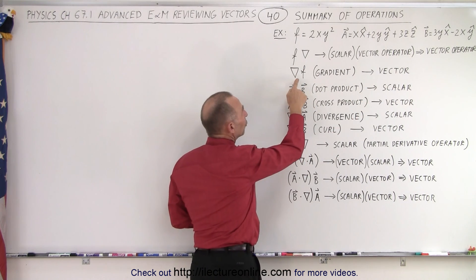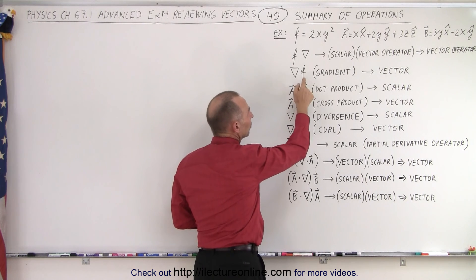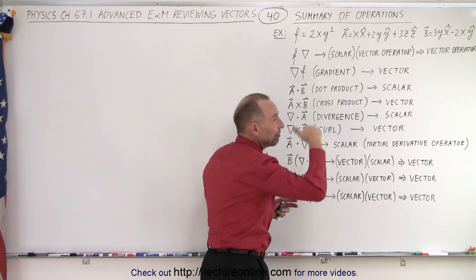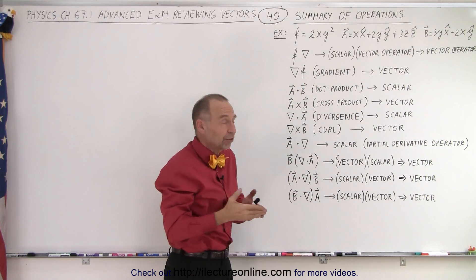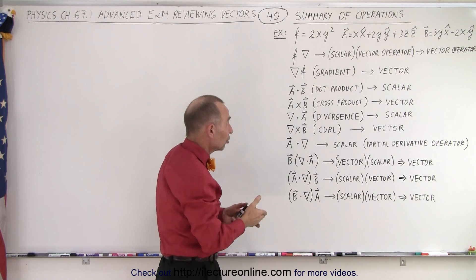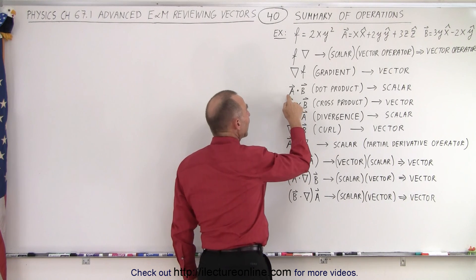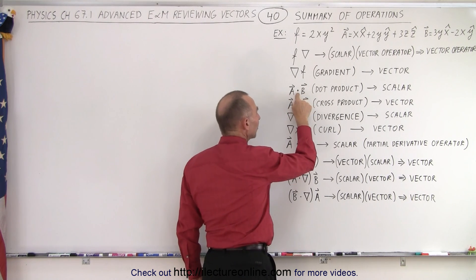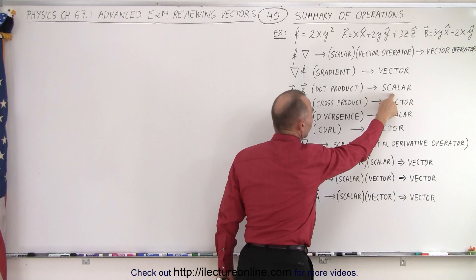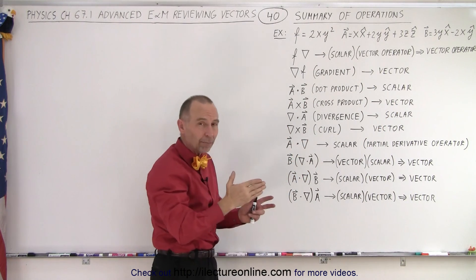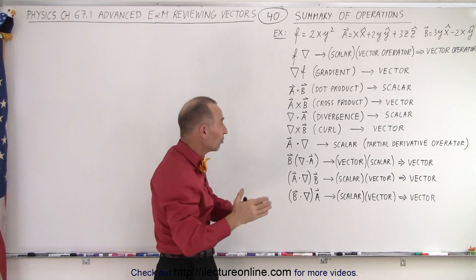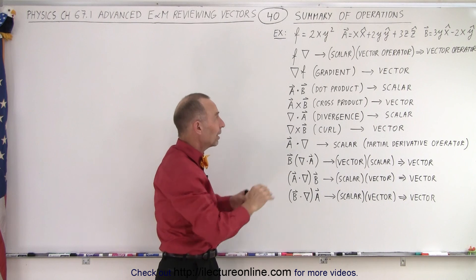The second one is what we call the gradient of a function. The gradient will result in a vector, it will point in the direction of the largest change in that function, so that's what we mean by the gradient. The dot product is simply a multiplied times b, via the dot product and that ends up in a scalar quantity. We simply multiply the x components, the y components and the z components together, add them together, we don't end up with a vector.